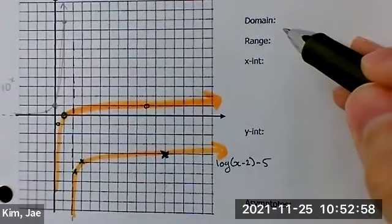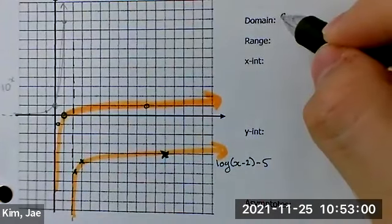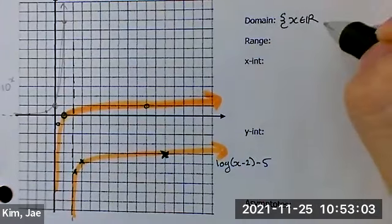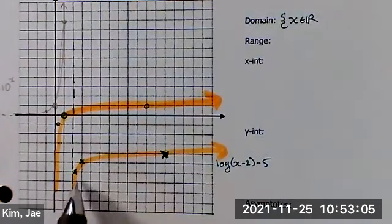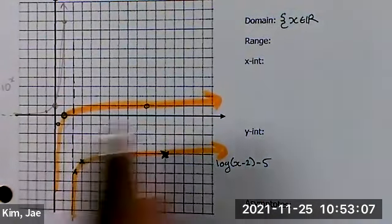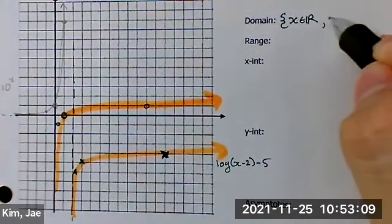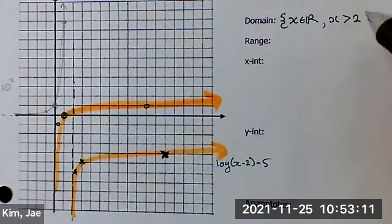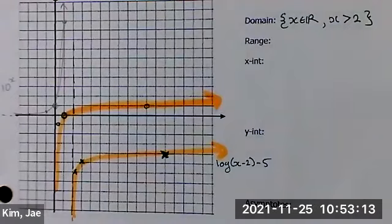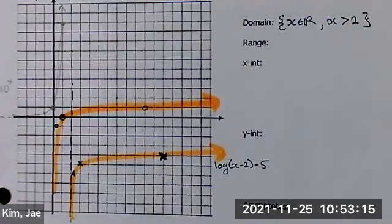Let's talk about domain. X belongs to any real number, but x has to be greater than 2. Good. X is greater than 2.